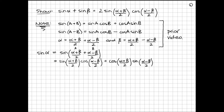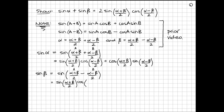Now we'll do the same for sine beta so that we can then add them up. So sine of beta would be equal to the sine of (α+β)/2 minus (α−β)/2. Same idea — we think of (α+β)/2 as A and (α−β)/2 as B, and we use our second compound angle formula. Therefore sine beta equals sine of (α+β)/2 times cosine of (α−β)/2 minus cosine of (α+β)/2 times sine of (α−β)/2.